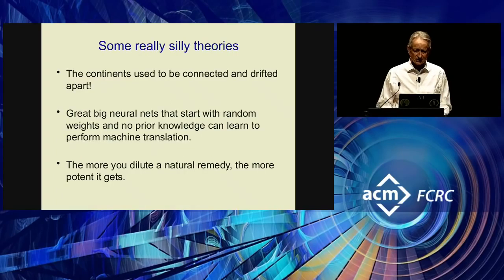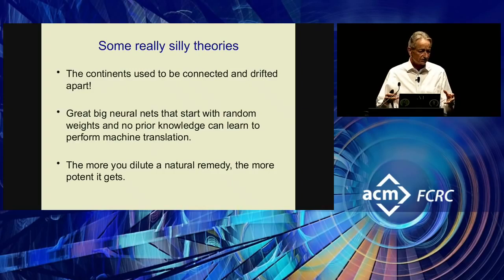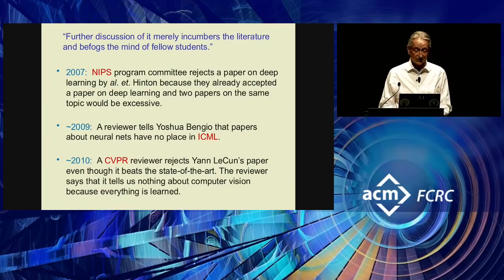I want to give some really silly theories. The continents used to be connected and then drifted apart — you can imagine how silly geologists thought that theory was. Great big neural nets that start with random weights and no prior knowledge can learn to do machine translation — that seemed like a very, very silly theory to many people. Wegener, who suggested continental drift in 1912, was laughed out of town even though he had very good arguments. He didn't have a good mechanism, and the geological community said they had to keep this stuff out of the textbooks. We had our own little experience of that in the second neural net winter.